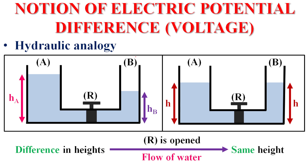Now let's use an analogy, as we always do in physics. Until we have flow, there must be a difference. In the case of water, we have two reservoirs with a tap, and there is a difference in heights. This difference in heights will cause a flow of water until they have the same height. So in a circuit, just as a difference in potentials (plus and minus) causes a flow of electrons, here a difference in height causes a flow of water.